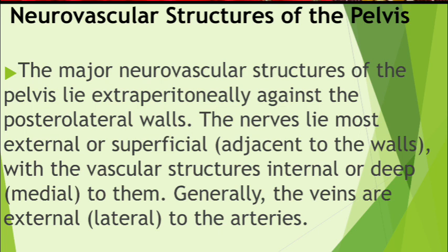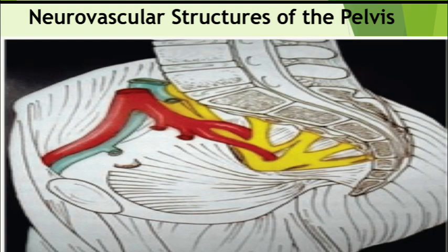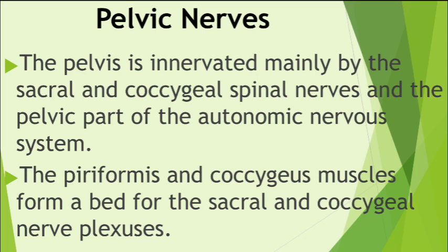The nerves lie most external — that is, superficial — adjacent to the pelvic wall, with the vascular structures internal or deep, medial to the nerves. The veins are lateral to the arteries. Here is an illustration showing the pelvic nerve in yellow, the pelvic vein in blue lying lateral to the arteries, and the pelvic arteries in red.